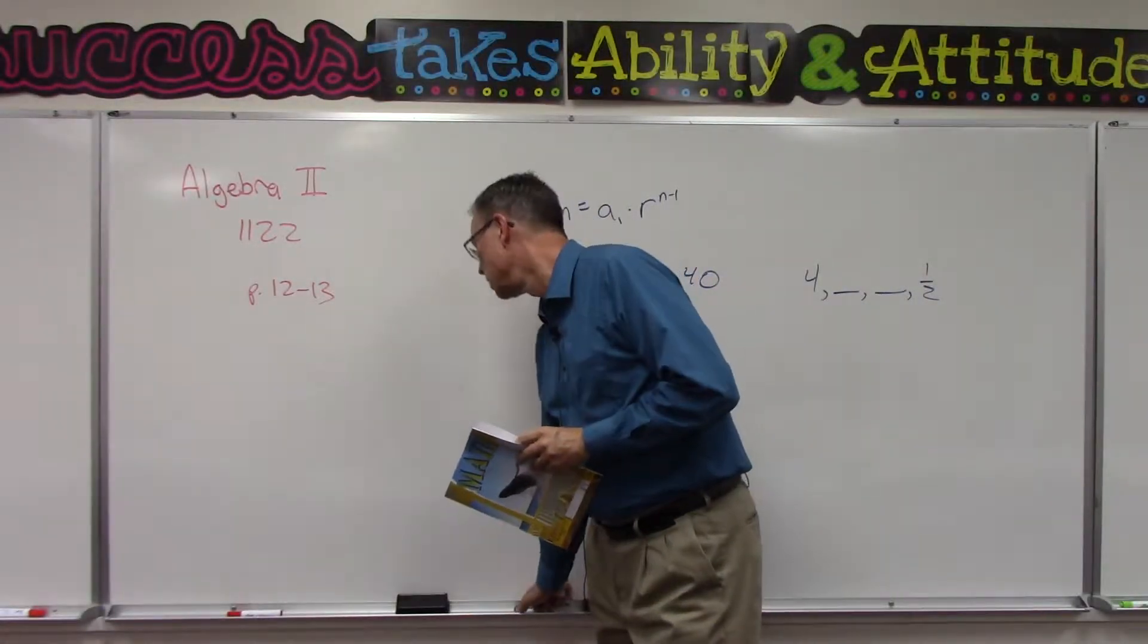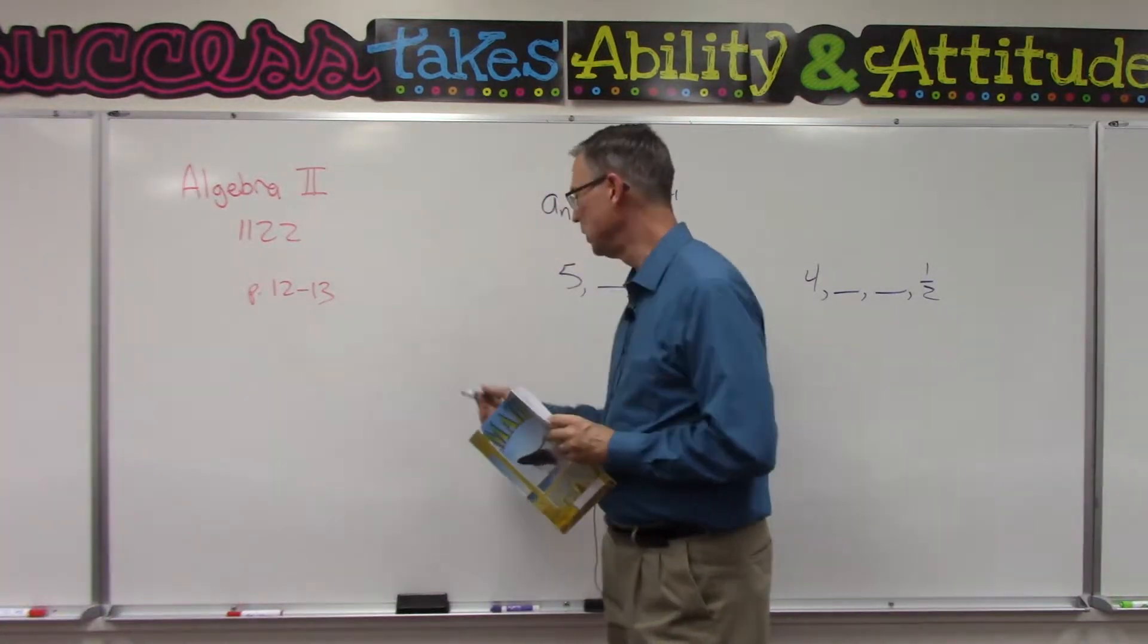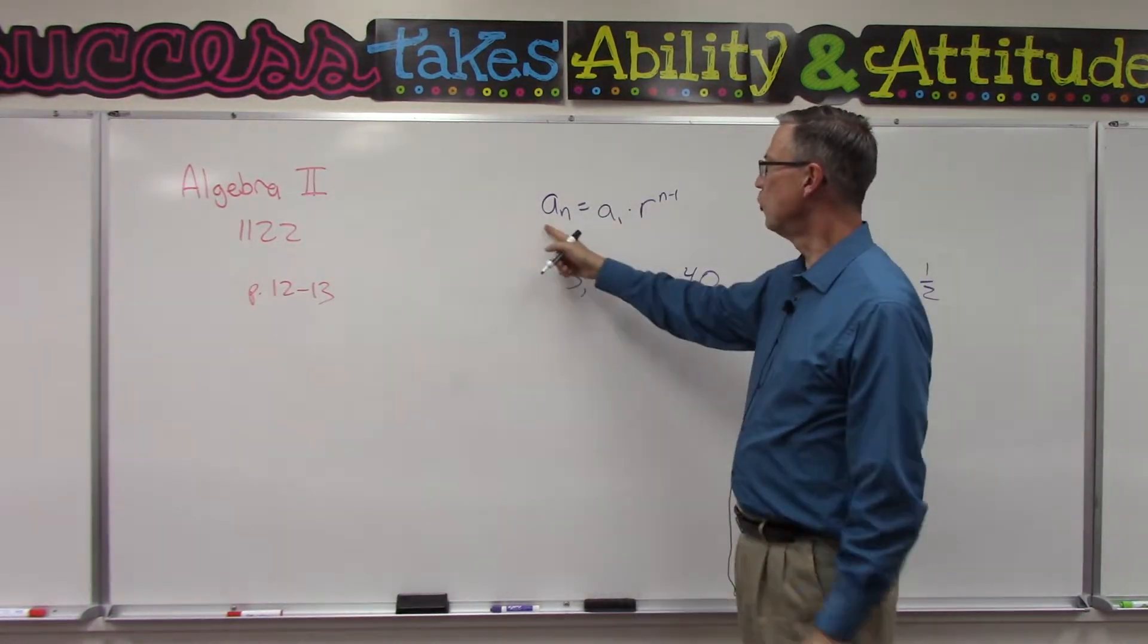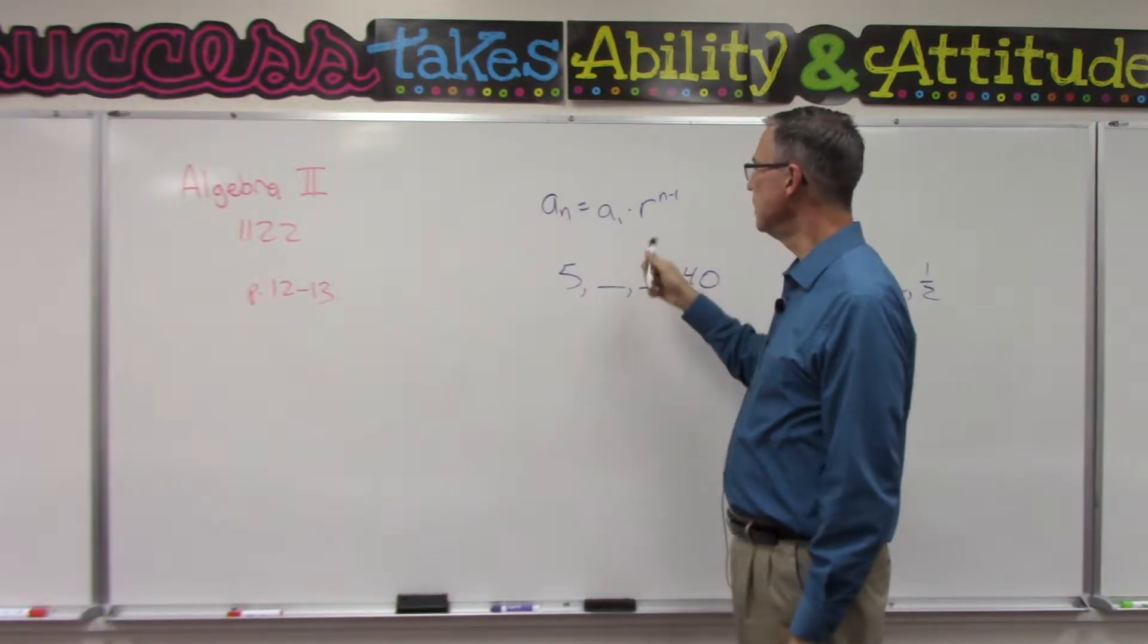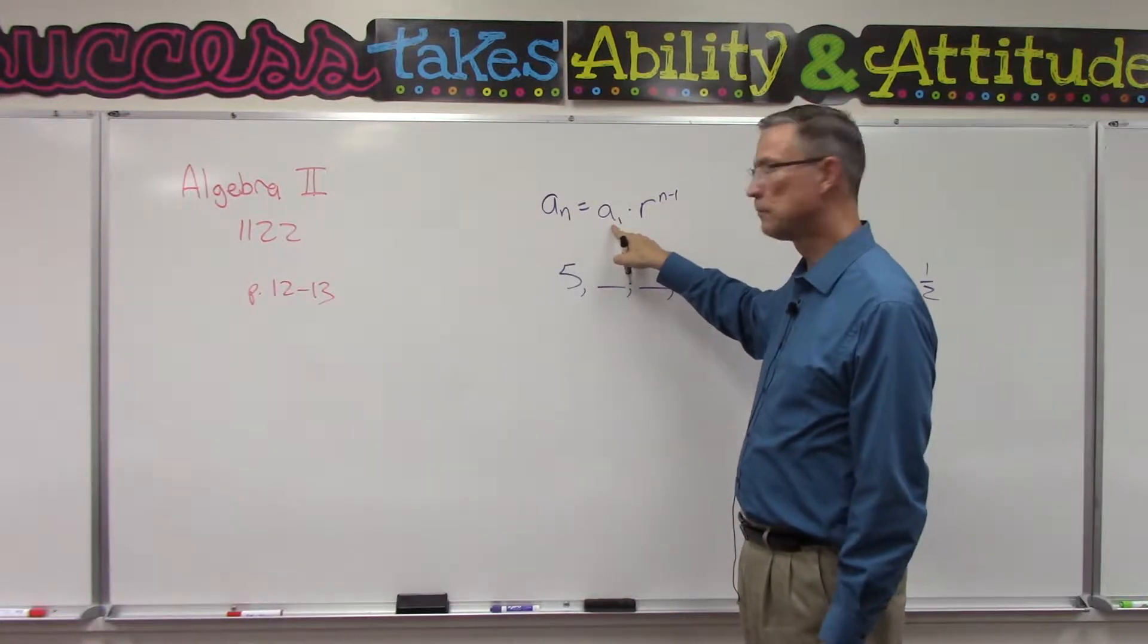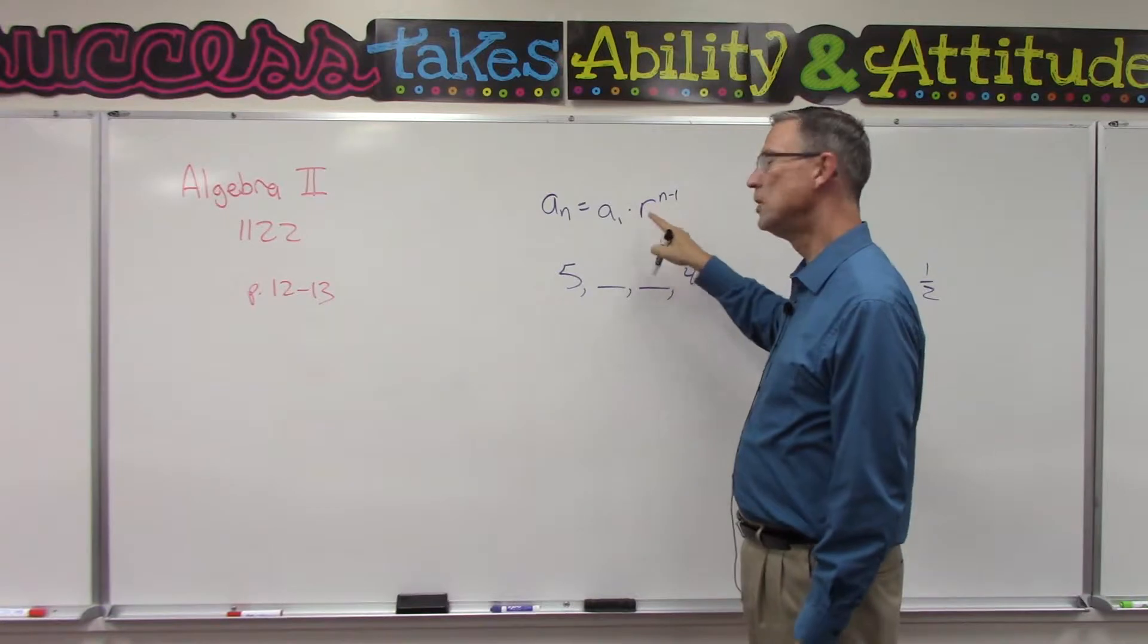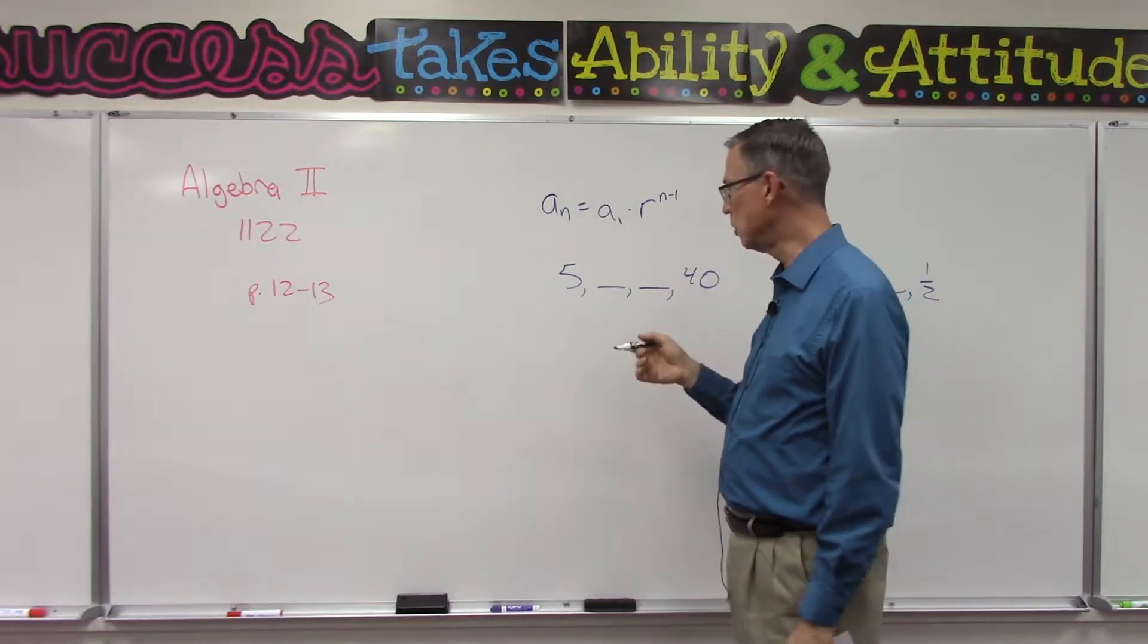Let's talk about pages 12 and 13 in 1122. We're going to use the same formula that we had in the previous lesson, but this time they're going to give us the n and the first term and they're going to give us the exponent, but we don't know the ratio - the number that's going to be multiplied times each term.